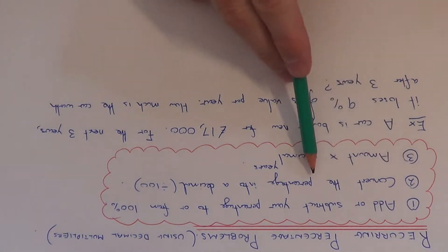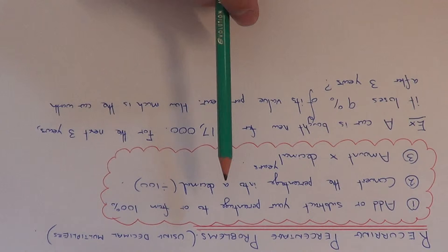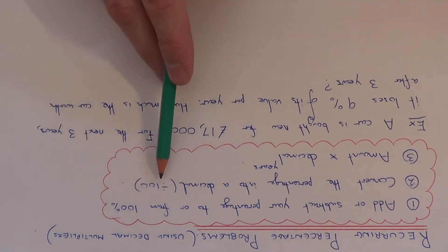The second step is to convert the percentage into a decimal, and you do that by dividing the percentage by 100. So this will give you your decimal multiplier.